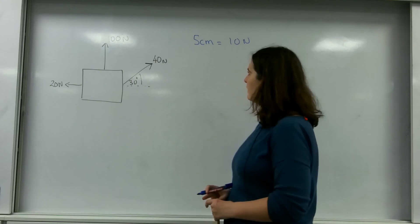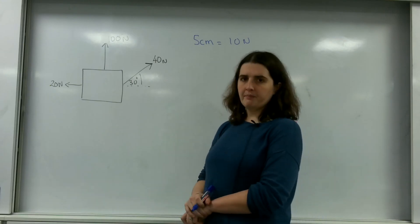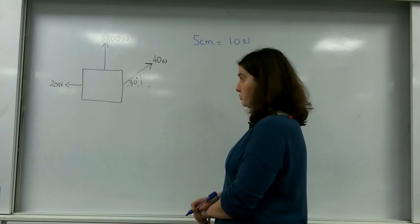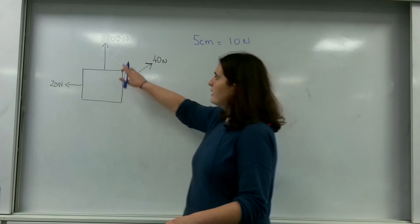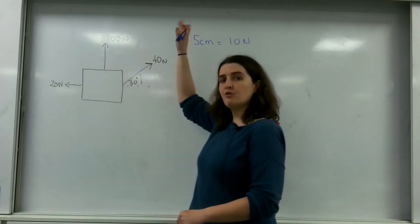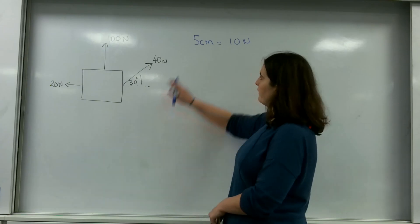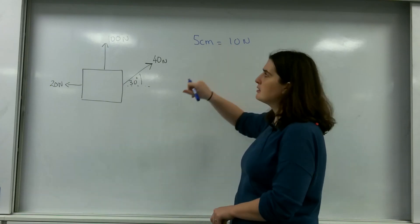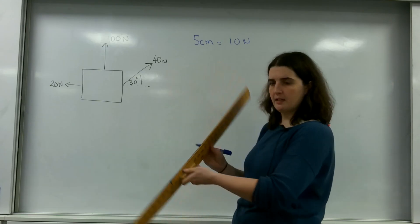So how you draw a vector diagram is you draw the vectors, but there are a couple of important rules. First of all, I'm going to take this 100 newtons which is going straight up. If 5 centimeters is 10 newtons, that means 50 centimeters would represent my diagram.